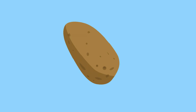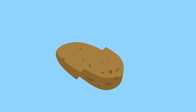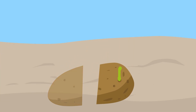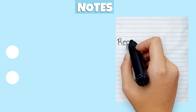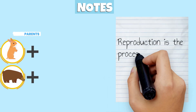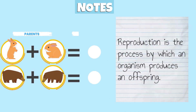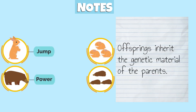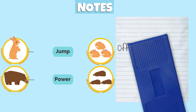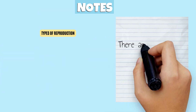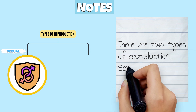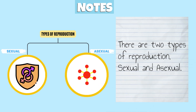For example, if we were to cut a part of the potato called the eye and plant it, an entire potato will grow out of it. Let's review what we just learned. Reproduction is the process by which an organism produces an offspring. Offspring inherit the genetic materials of the parents. There are two types of reproduction: sexual and asexual.